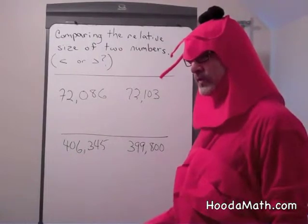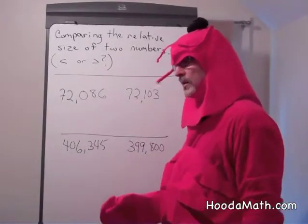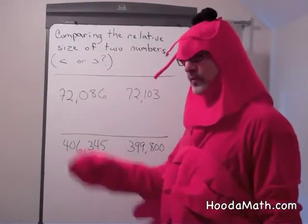If they have different amounts of digits, one has eight digits and it's a whole number, it's always going to be larger than one that has seven, six, five, four, or fewer digits.